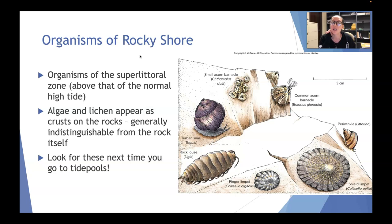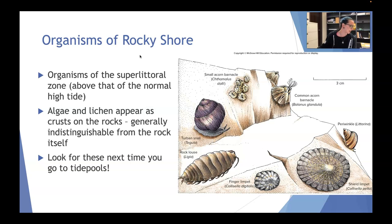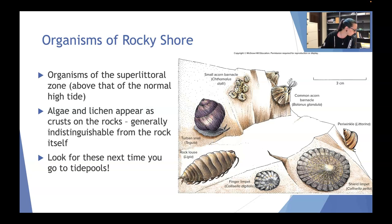Algae and lichen appear as crusts on rocks and are generally pretty indistinguishable from the rock itself. I highly encourage you to look for these next time you go to the tide pools, especially during kind of high tide when you're walking around the superlitoral zone. Limpets and periwinkle snails are little herbivores — remember, herbivores are plant eaters.